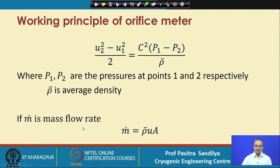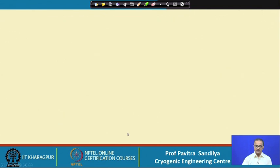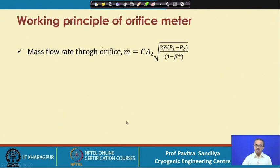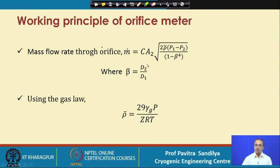We represent the mass flow rate as the product of density, velocity, and the area of cross section — where area times velocity is the volumetric flow rate, and multiplied by density gives the mass flow rate. After rearranging, beta is the ratio of the diameters at point 2 and point 1, and since d2 is always less than d1, beta will always be less than unity.